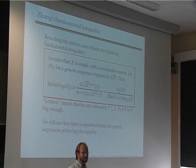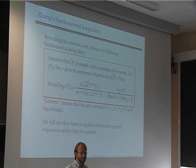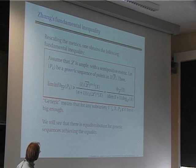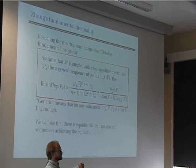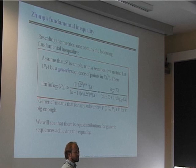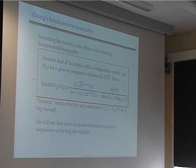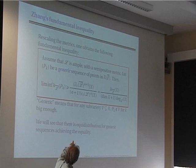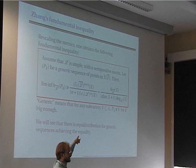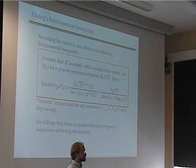For those values of the scaling I will get positivity of height, and then you can see what happens in practice. The result is: if you take an ample line bundle with a semi-positive metric and any generic sequence of points P_k (no subsequence contained in any fixed subvariety), then the height of the points P_k is bounded from below in the limit by the expression h(X)/((N+1)·deg(X)), the height of the variety divided by the degree times N+1.